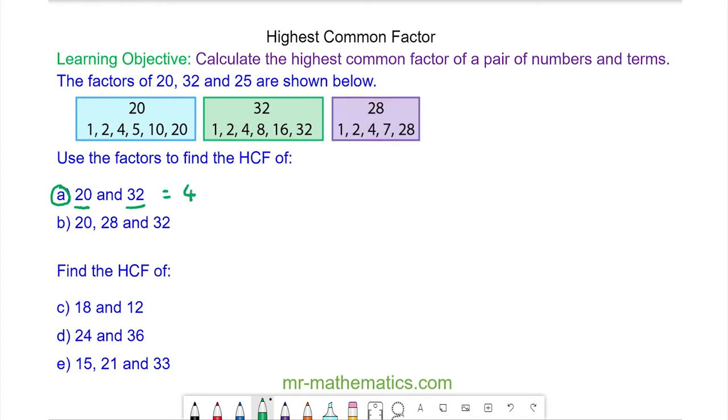For question B, again we can see that 1 is common to 20, 32 and 28 as is 2 because they are even and again as is 4.